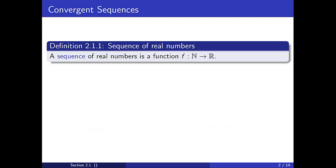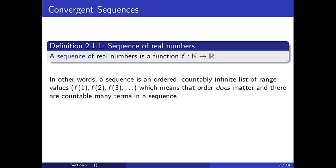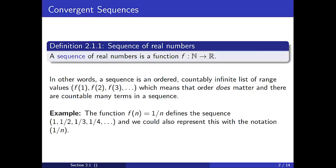Recall that a sequence is a function from the natural numbers to the real numbers. In other words, a sequence is an ordered, countably infinite list of the range values of the defining function, which means that the order of the terms matters and that there are countably many terms in a sequence. For example, the function f(n) = 1/n yields the sequence 1, 1/2, 1/3, 1/4, and so on, and we can also represent this with the notation (1/n).